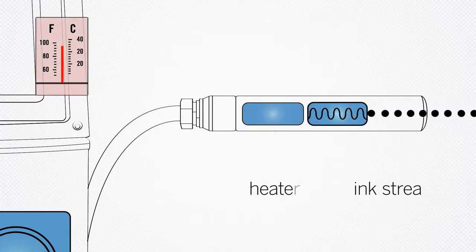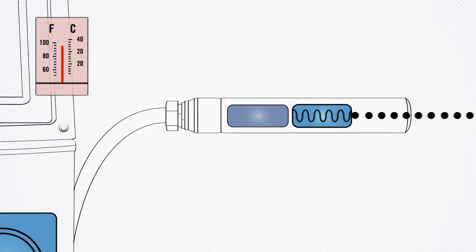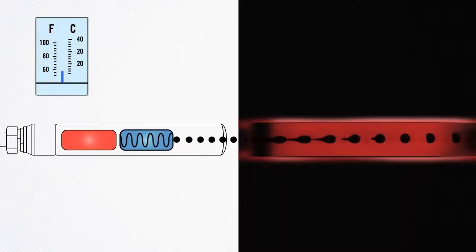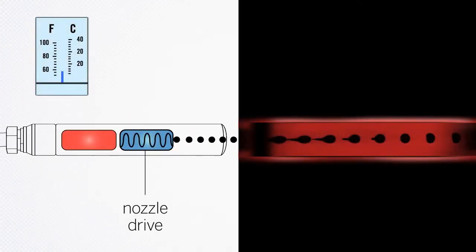Thus, jetting characteristics remain constant under fluctuating conditions. Ink drop creation is optimized through dynamic adjustment of nozzle drive voltage and frequency, providing optimum ink break-off, ensuring accurate drop placement and printhead cleanliness.